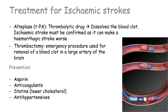We also have thrombectomy, an emergency procedure for a small number of severe ischemic strokes caused by a blood clot in a large artery in the brain. The procedure involves inserting a catheter into an artery — often in the groin — and passing a small device through the catheter into the artery in the brain. The blood clot can then be removed using the device or through suction, as demonstrated in this image.